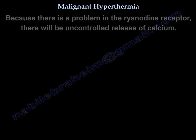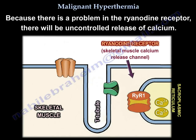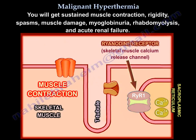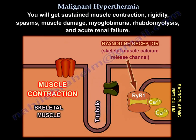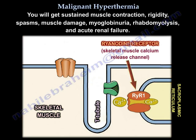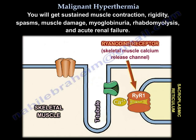Because there is a problem in the ryanodine receptor, there will be uncontrolled release of calcium, resulting in sustained muscle contraction, rigidity, spasms, muscle damage, myoglobinuria, rhabdomyolysis, and acute renal failure.